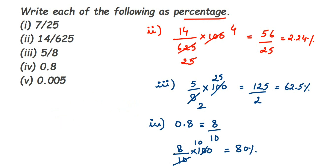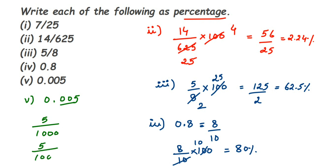The fifth question: decimal 0.005. Convert to a fraction first — there are three digits after the decimal, so I get three zeros: 5 divided by 1000. Now find the percentage: 5 upon 1000 multiplied by 100. Cancel in the 100-table: 100 ones are 100 and 100 tens are 1000. Then cancel in the 5-and-10-table: 5 ones are 5 and 5 twos are 10. I'm left with 1 upon 2.